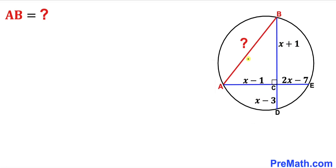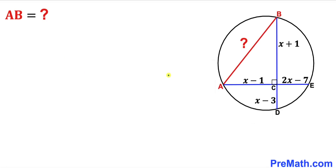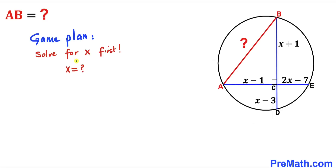Now we are going to calculate this distance AB. Let's go ahead and get started with the solution. We are going to solve for x first — we are going to find the value of x before we find the value of this length AB.